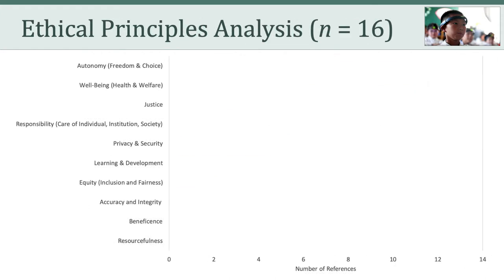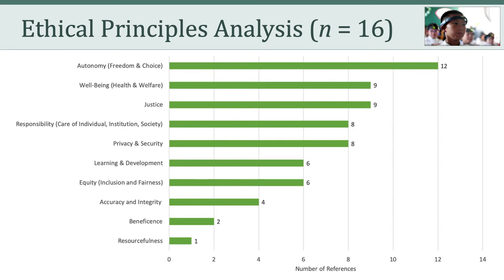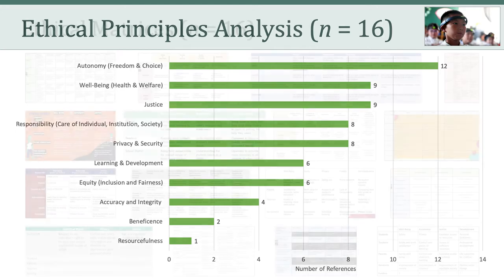Next, I did the same type of analysis for the ethical principles, which collapsed into 10 different categories. The most represented principle was autonomy, followed by well-being and justice — not surprising since those were in the example provided in the assignment. Beyond those, we had responsibility, then privacy and security, included in 8 of the 16 matrices. From there: learning and development, equity, accuracy and integrity, doing no harm, and finally resourcefulness.